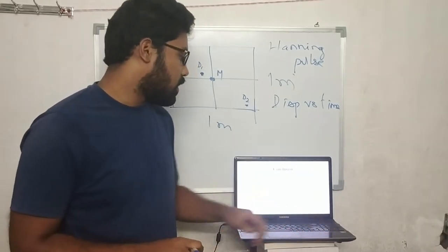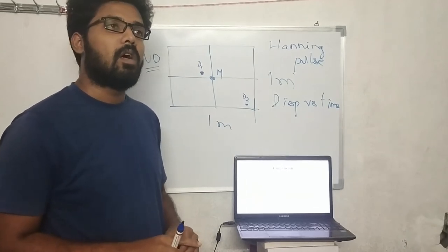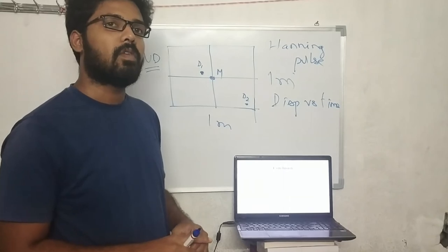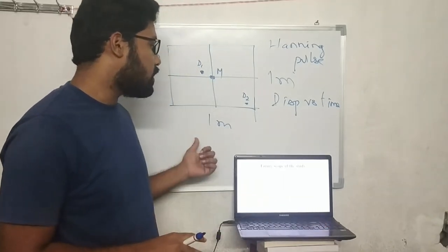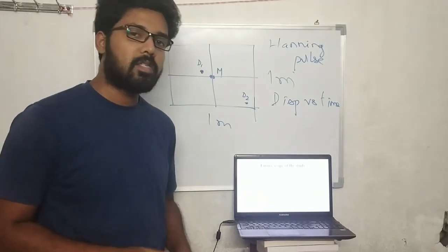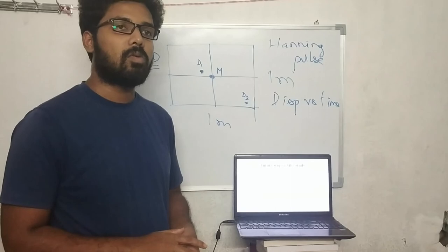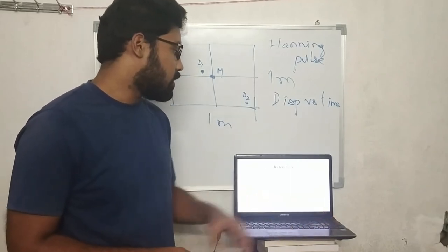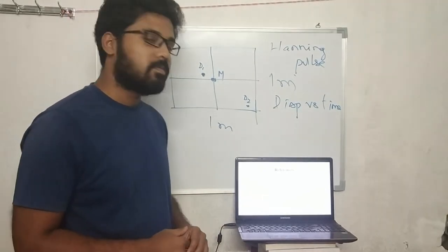The conclusion is that because of the presence of damage, there was displacement in the wave. My future scope: in this study the damage location was known to us. My future study will be to find out the damage location and the magnitude of the damage. These are the references I went through to study this topic. Thank you.